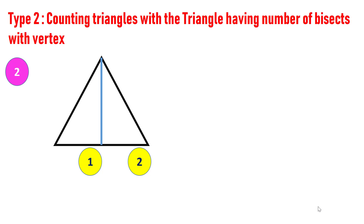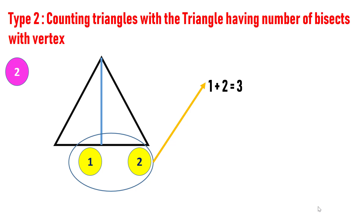The trick here is to just number the parts. In this figure, I have numbered all the parts as one and two. After numbering, add the numbers — that will be the total number of triangles. Here, adding 1 and 2 will yield three, which is the number of triangles in the figure.